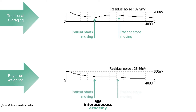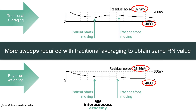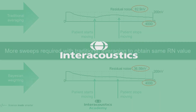Instead, it remains stable, and then continues to drop after the patient has settled. And for each of these examples, where 4,000 sweeps have been measured, there is a much lower residual noise level in the Bayesian weighting example than in the traditional averaging example. A much better quality waveform has been recorded in the same number of sweeps.